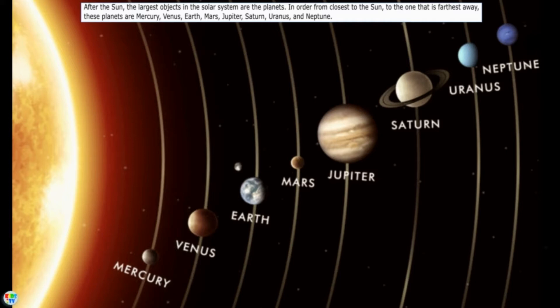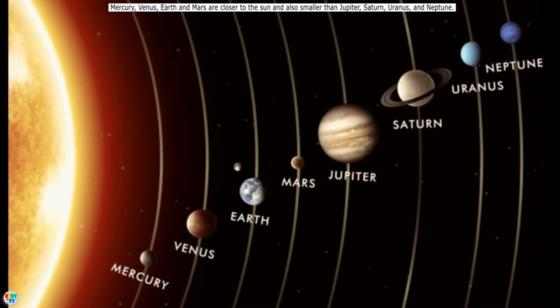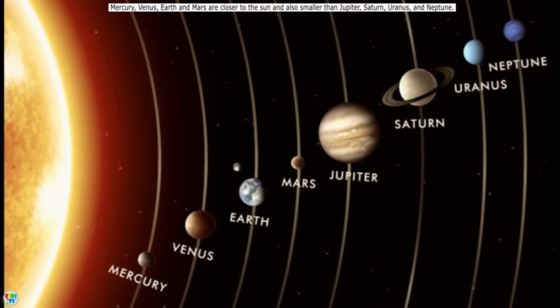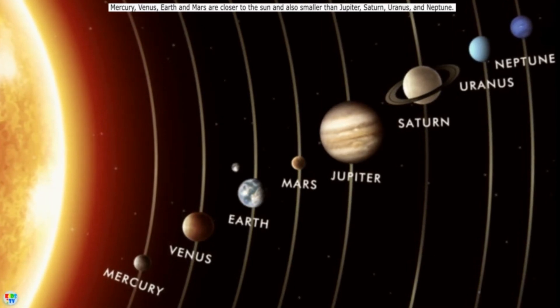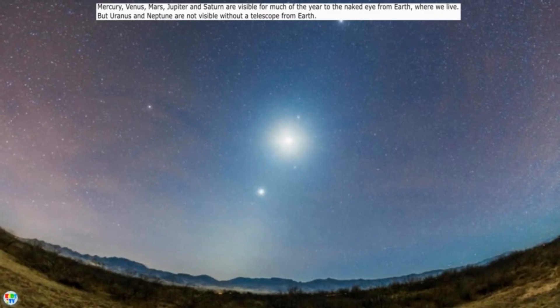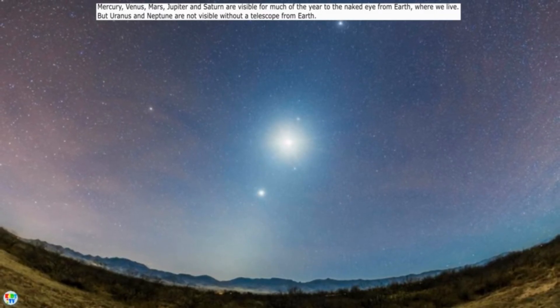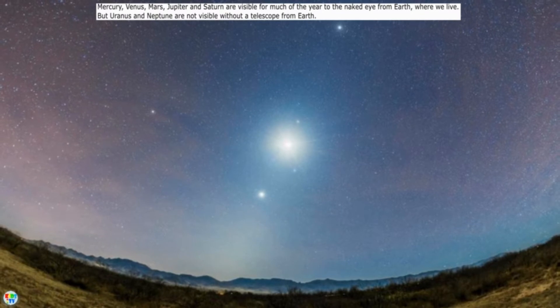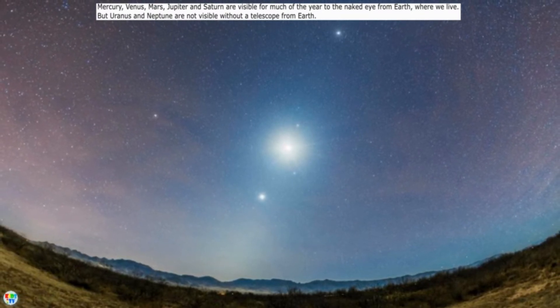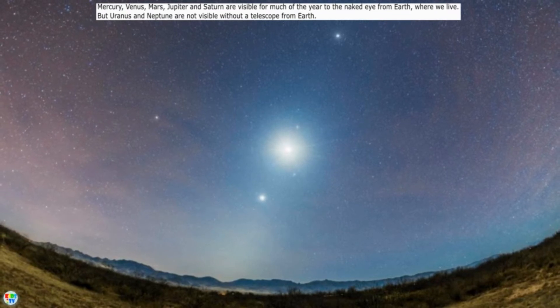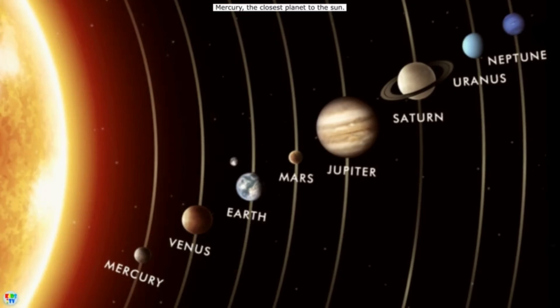Mercury, Venus, Earth, and Mars are closer to the Sun and also smaller than Jupiter, Saturn, Uranus, and Neptune. Mercury, Venus, Mars, Jupiter, and Saturn are visible for much of the year to the naked eye from Earth where we live, but Uranus and Neptune are not visible without a telescope from Earth.